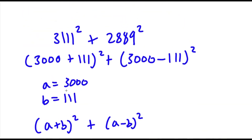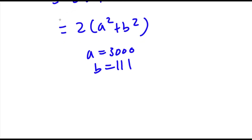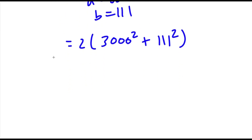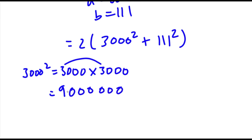Now, remember we set a equal to 3,000 and b equal to 111. So if I substitute these values back in, I get 2 times (3,000 squared plus 111 squared). Now, 3,000 squared is 3,000 times 3,000. We can ignore the zeros and just do 3 times 3, which gives us 9, and then add 6 zeros — so 3,000 squared equals 9 million.